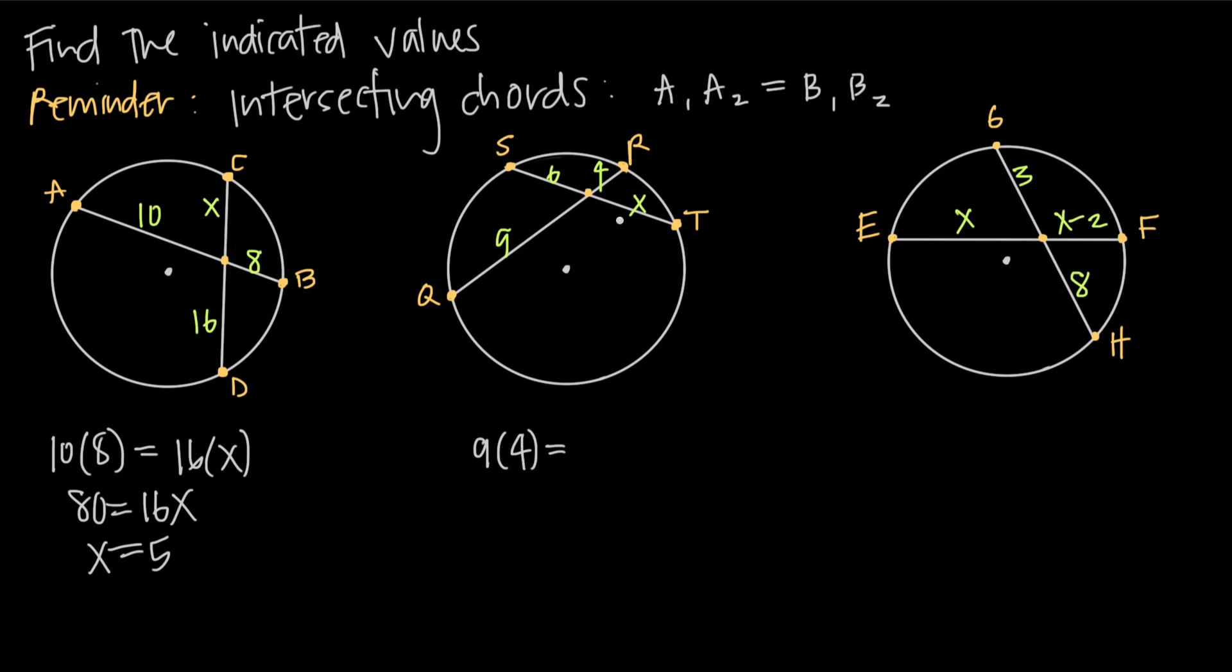And then set that equal to the lengths from the two segments of the other chords, 6 and x. So 6 times x. That's going to give us 36 is equal to 6x. And dividing both sides by 6, we get x is equal to 6.